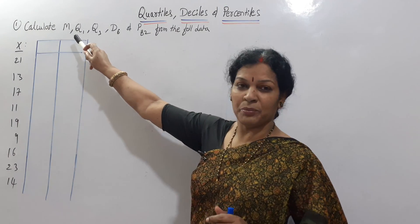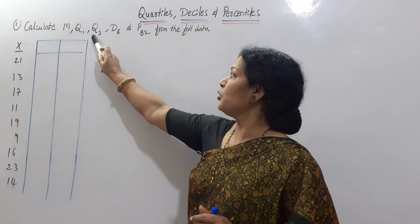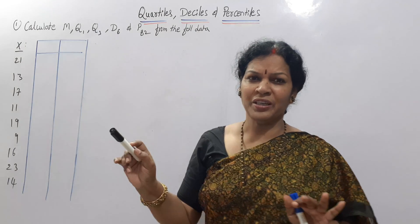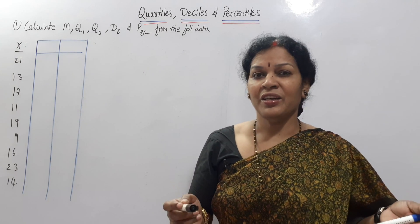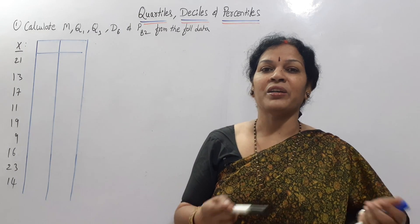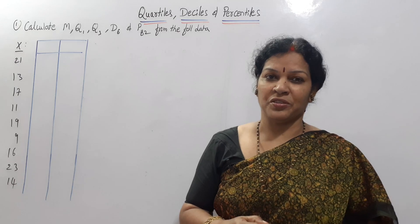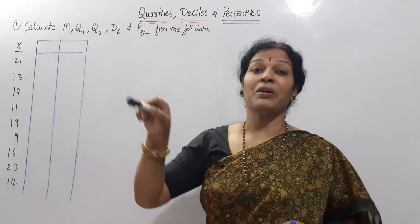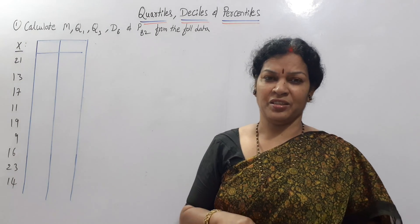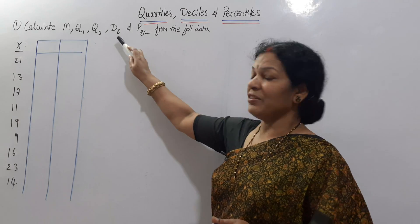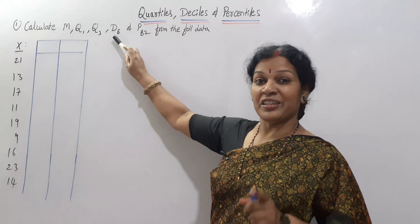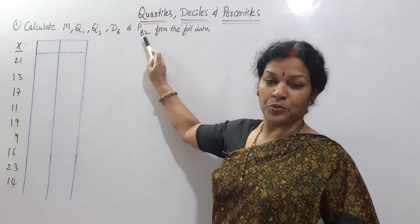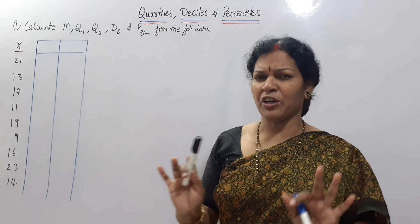M is median. Q1 is quartile 1, which represents 25%. Q3 is quartile 3, which represents 75%. And D6 is decile 6, and P82 is percentile 82.